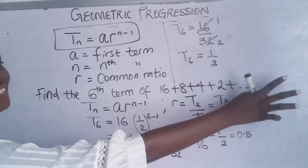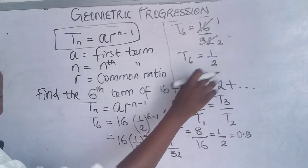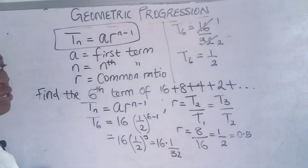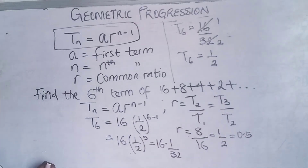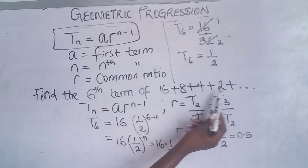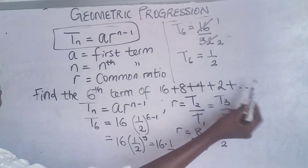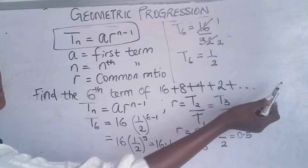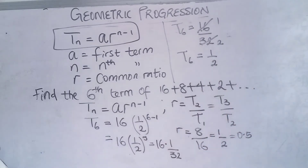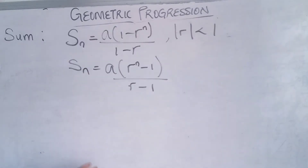Simplifying 16/32: dividing both by 16 gives 1/2. So the sixth term is 1/2. That means if you continue the sequence — 1, 2, 3, 4 terms — the next term and then the sixth term will be 1/2.